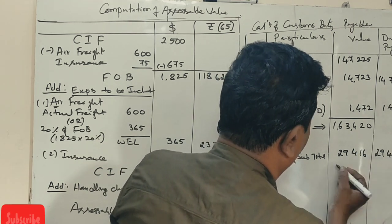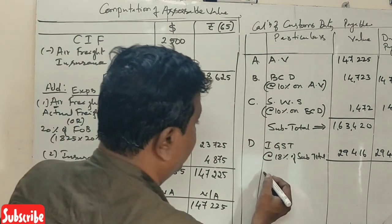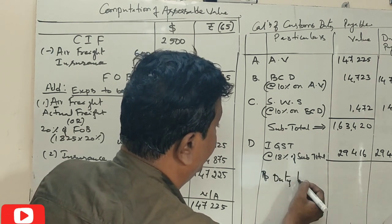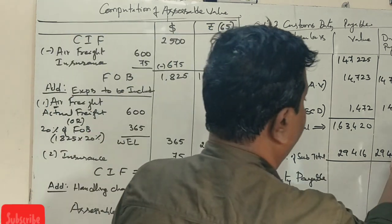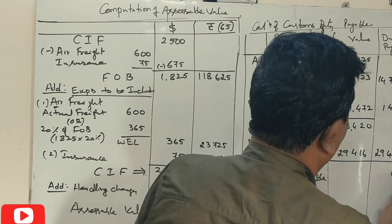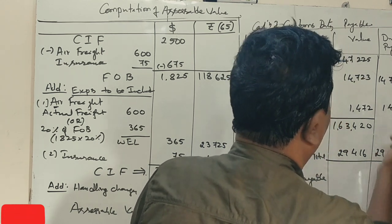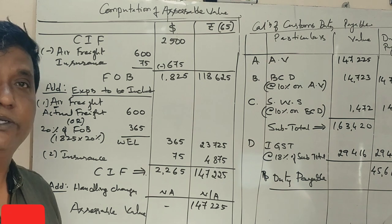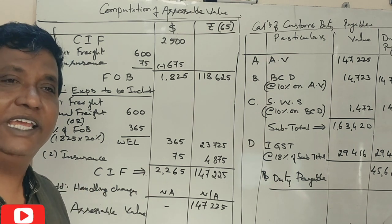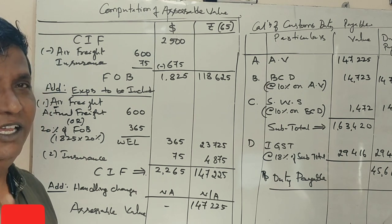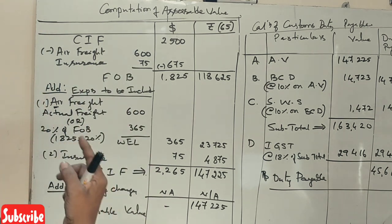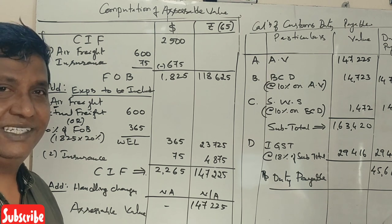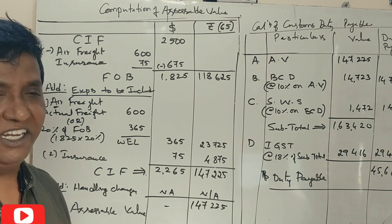Adding up all components, the total customs duty payable comes to ₹611 rupees. So this was the 14-mark question from 2018. If you have any questions, please comment below, and if you have time, I will definitely reply. Thank you.